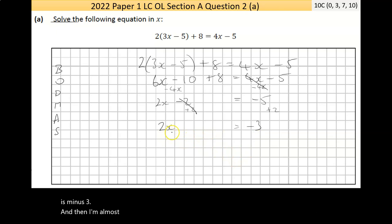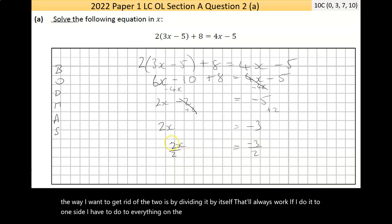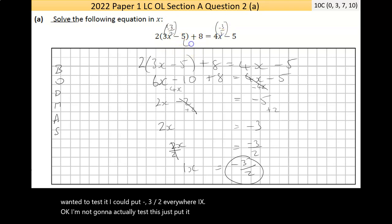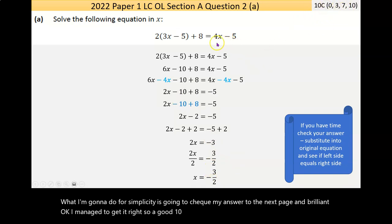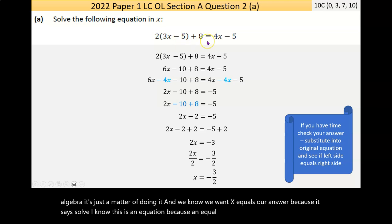And then I'm almost finished. I still want x on its own, but I realize here that the way I want to get rid of the 2 is by dividing it by itself. That'll always work. If I do it to one side, I have to do it to everything on the far side. The 2 divided by 2 is 1. So 1x is equal to minus 3 over 2. They don't tell me to leave this in decimal place. Now, if I wanted to test it, I could put negative 3 over 2 everywhere I see x. What I'm going to do for simplicity is check my answer on the next page. And brilliant. I managed to get it right. So a good 10 marks.